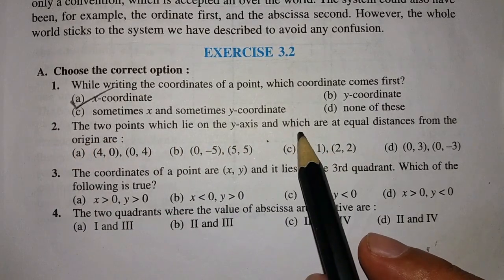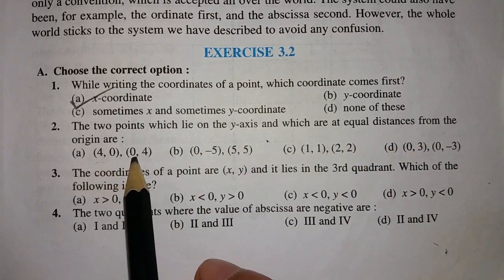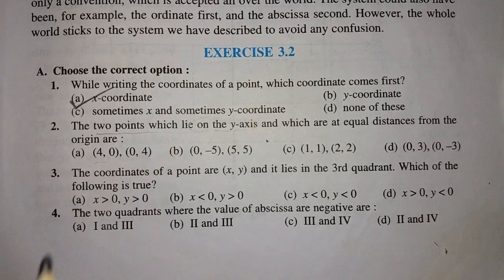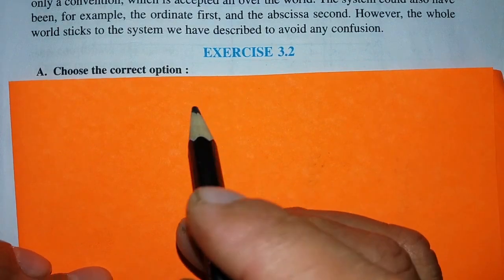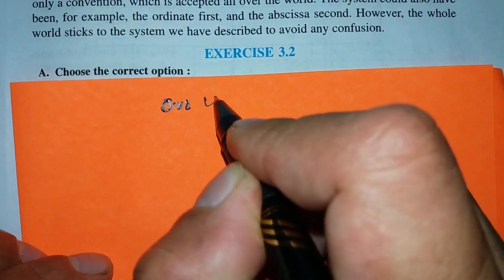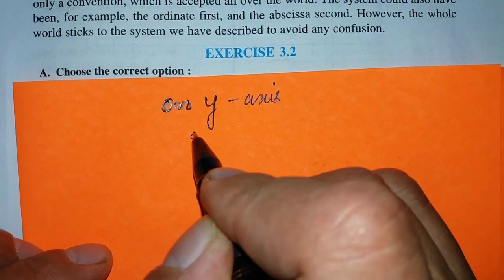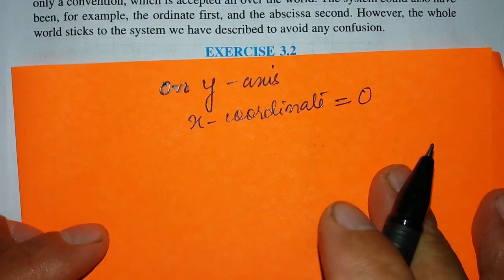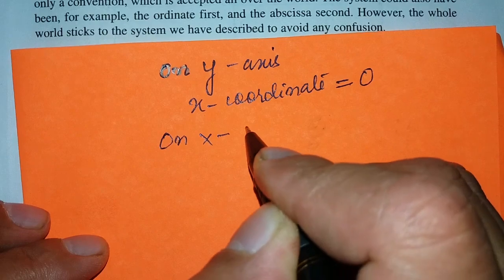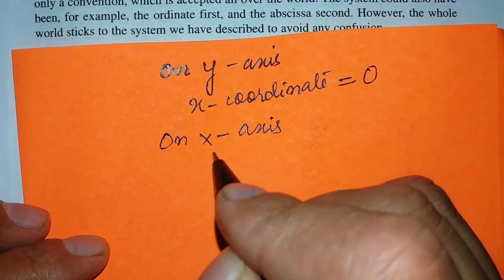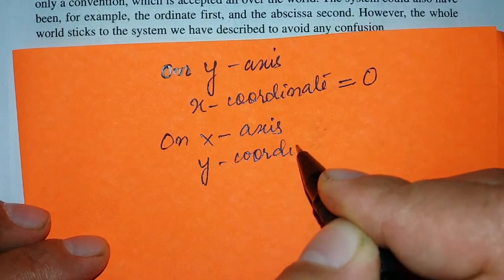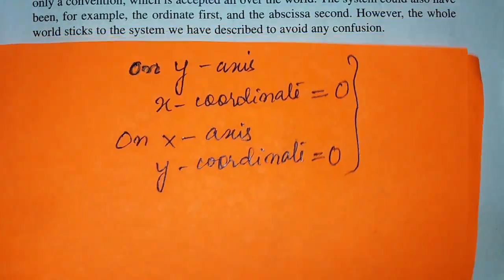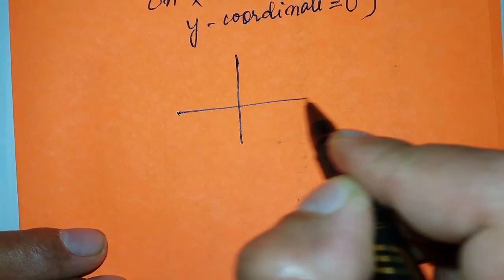Question number two: which two points lie on the Y axis and are at equal distances from the origin? On the Y axis, the X coordinate is 0. On the X axis, the Y coordinate is 0. This is a very important point to remember.